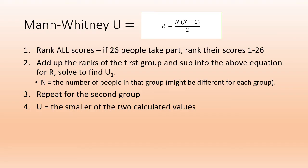Mann-Whitney U is the first one with an equation. The good news is, although you do the equation twice, it's the same equation for both groups. For this one, you rank all the scores. So if 26 people take part, 13 in each group, you rank the scores 1 to 26. Add up the ranks of the first group, sub it into the equation, solve that, and that gives you a U value for group one.